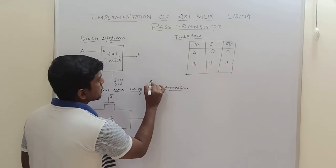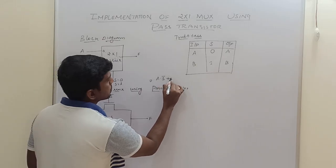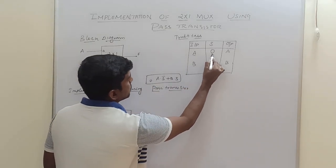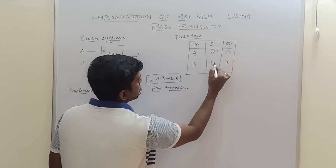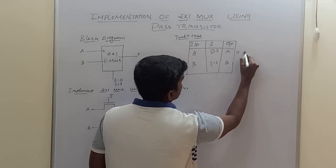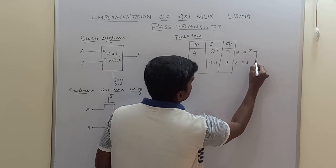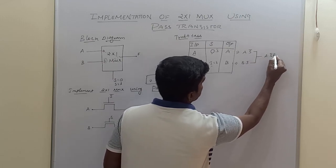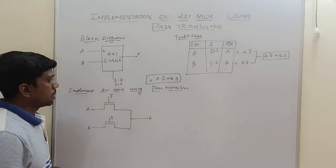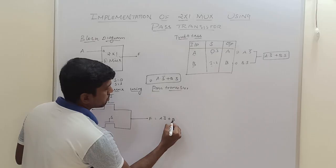The MUX boolean expression is A·S̄ + B·S. Now just take the product of these two terminals. So 0 means S̄, 1 means S. Here the output expression is A·S̄. Here the output expression is B·S. Just the sum of these two expressions: A·S̄ + B·S. You will get the MUX expression. So output F equals A·S̄ + B·S.